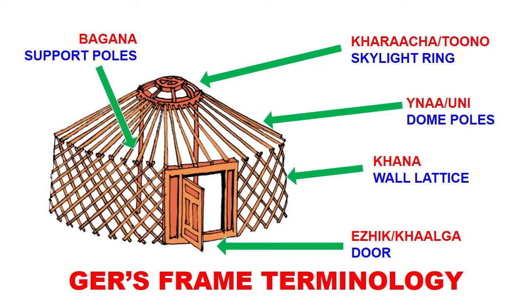The wall lattice section is called hana. The dome poles are called ana or unu. The skylight ring is called hara-cha or tono. And the support poles are called bagana. So these are the major main frame terminology terms.